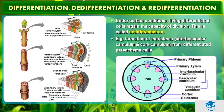This is a shoot apex where we have taken a transverse section (TS) for a zoomed view. This is the epidermis, this is the cortex, this is the primary phloem which conducts minerals, this is the vascular cambium shown in green, and the primary xylem is shown in brown. The central portion is the pith. Growth takes place in both the downward and upward areas, as shown by the two arrows.